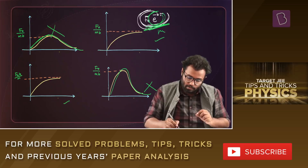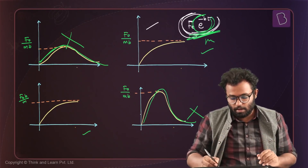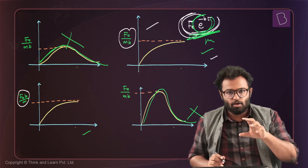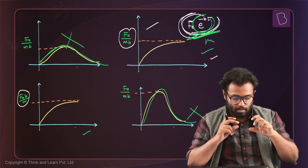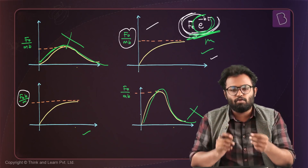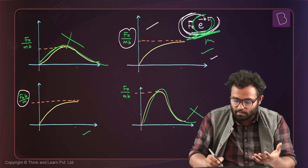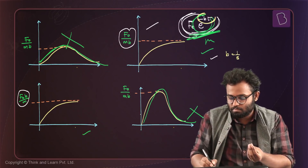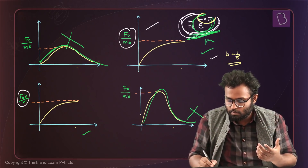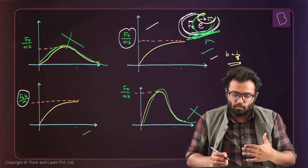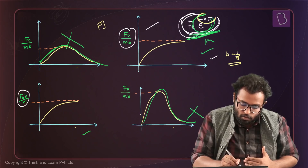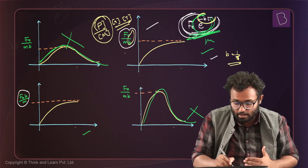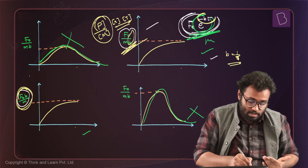The only difference between the two remaining graphs is the peak value: one says F₀/MB and the other says F₀B/M. Since e^(-Bt) must be dimensionless, B has dimensions of 1/T. So F₀/(MB) has dimensions of force divided by mass times time — that's acceleration times time, which is velocity. This means F₀B/M does not have dimensions of velocity, so the peak value must be F₀/MB.